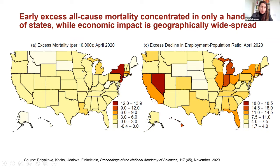This observation led us to think about how excess all-cause mortality varied across different states for different parts of the population — specifically, how different racial and ethnic groups experienced all-cause mortality during the first month of the pandemic. There are two hypotheses: if mortality is driven purely by COVID-19 infections, we'd expect it concentrated in New York and New Jersey; but if indirect economic impacts also matter, we'd expect mortality spread more broadly across the country.